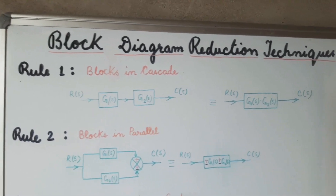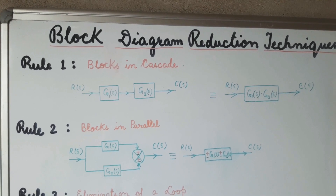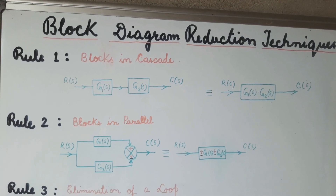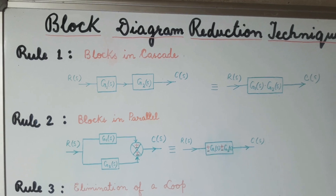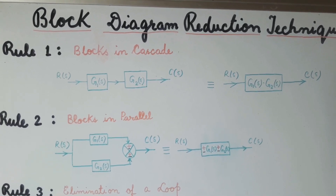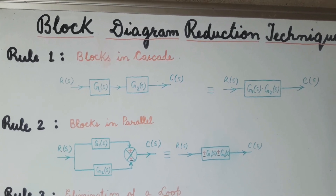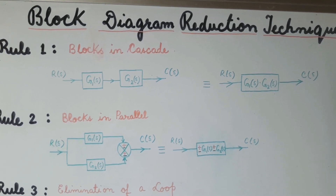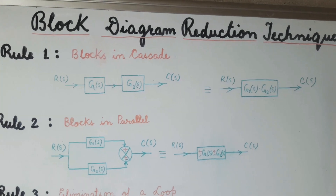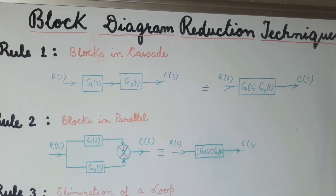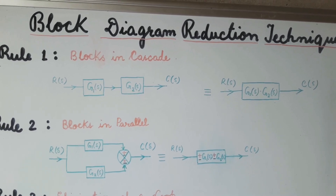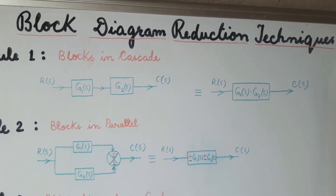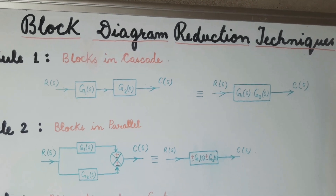The first rule is that when the blocks are connected in cascade, we can replace those blocks by a single block between the input and the output. In the figure we have shown two blocks G1(s) and G2(s) which are connected in series or cascade with each other. In that case we can replace the two blocks G1(s) and G2(s) by a single block between the input R(s) and output C(s), and the value of that block will be obtained by taking the product of G1(s) and G2(s).